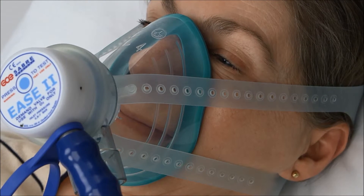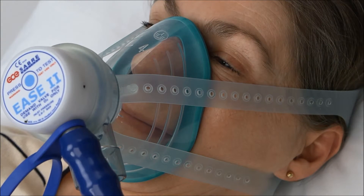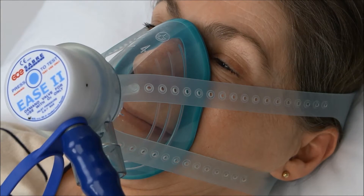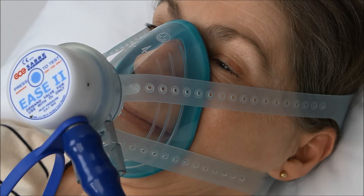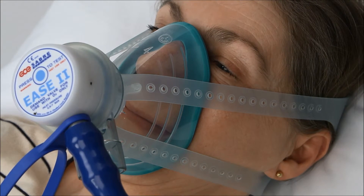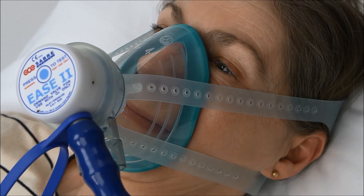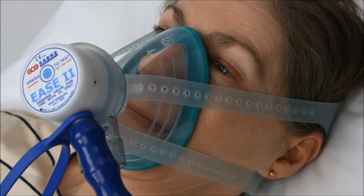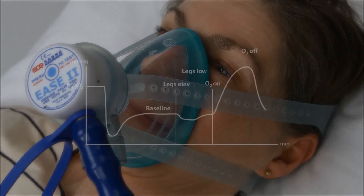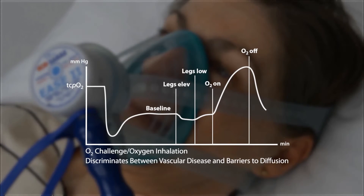Another test is the oxygen challenge. The patient breathes 100% oxygen in a non-rebreathing mask to discriminate if low TCPO2 values are caused by vascular disease or by edema or inflammation. Use a securely fitted mask. Use a pulse oximeter to verify both cardiopulmonary performance as well as the NRB mask function. Perform the test whenever you obtain a baseline value below 50 millimeters of mercury.